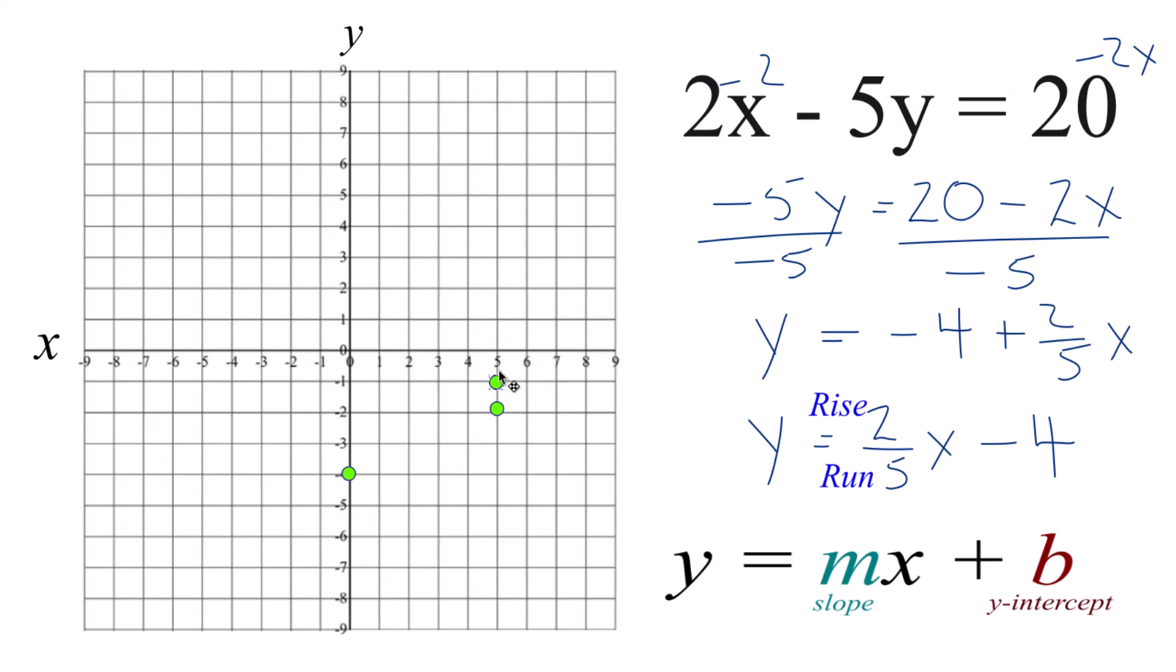From there, go up 1, 2, and go 1, 2, 3, 4, 5. But we're off the graph, so let's do this.